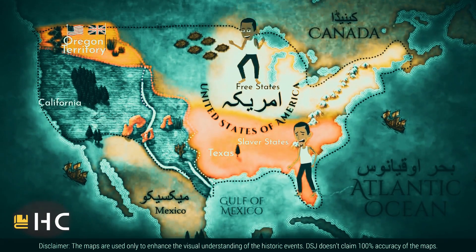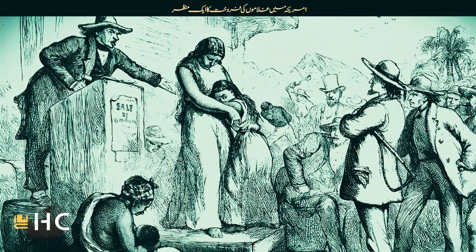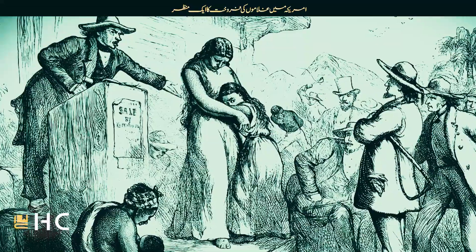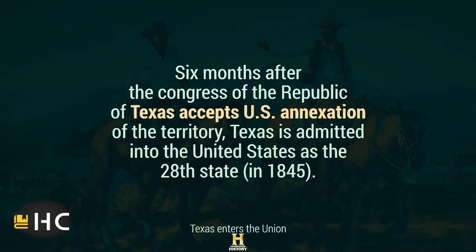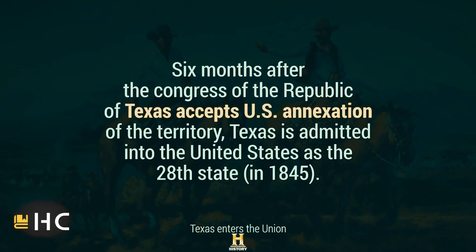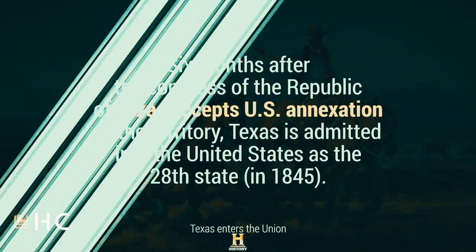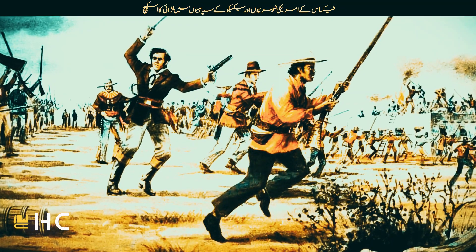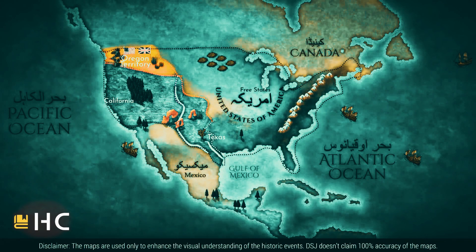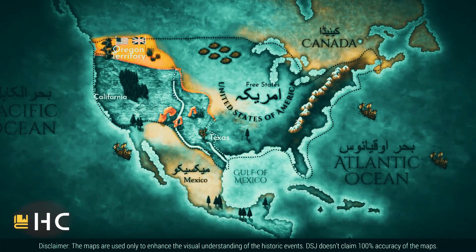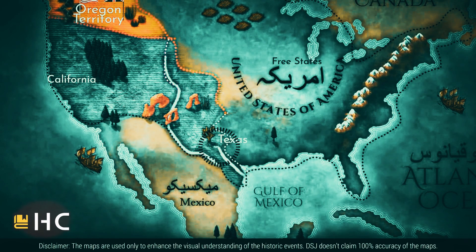The Texans wanted to join their motherland — the United States — and asked the US government to include Texas in the Union. But the US government did not want to include Texas due to political issues, mainly slavery. Many northern states had abolished slavery, and many US politicians were against it; they did not want to include Texas because slavery was still legal there. But supporters of slavery in the US government finally won in 1845, forcing the US government to recognize Texas as a slave state. Thus, the US effortlessly controlled Texas without going to war with Mexico.